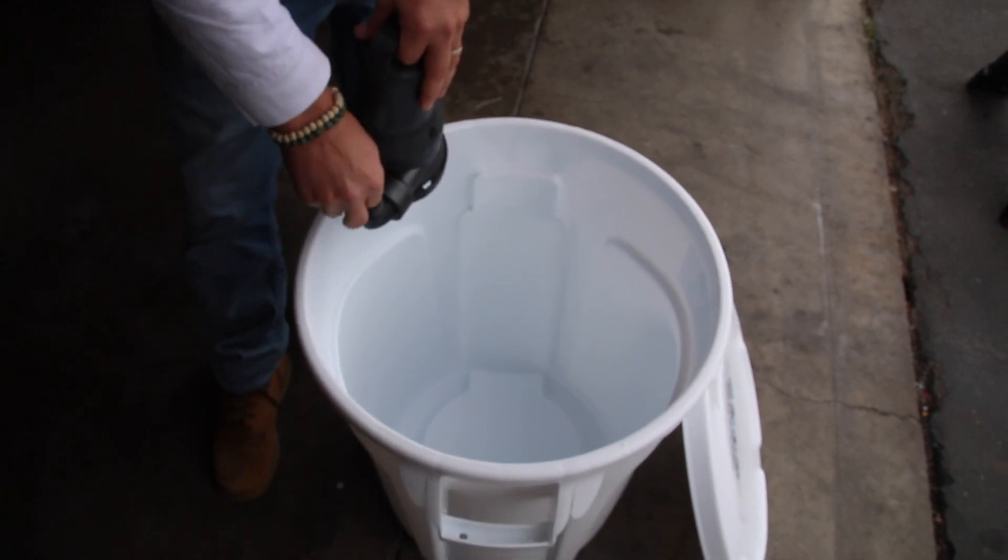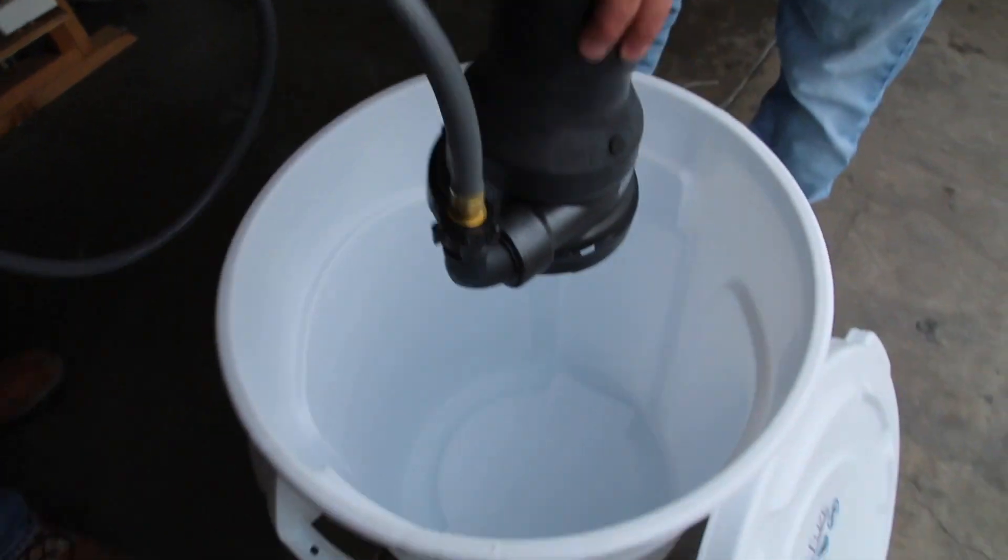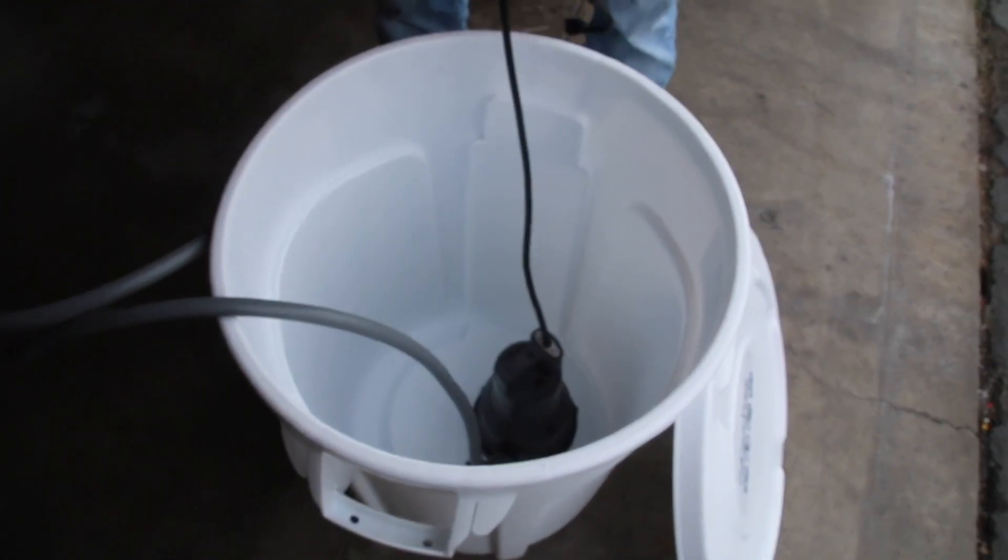Now we're going to show you how we set up our pipe fuse. First, we hook up our recirculation pump and set it down right into the bin.